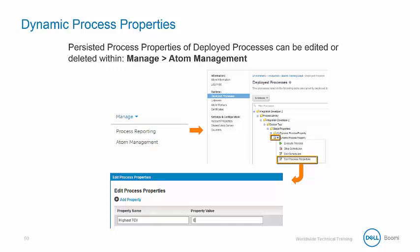When a process is deployed, a dynamic process property that is persisted can be edited or deleted under the Atom Management tab. Click the Deployed Processes tab, select the Process blue drop-down arrow containing the persisted process property, and then select Edit Process Properties. The Edit Process Properties pane will display the last run and last successful runtime stamps, as well as the property name and value, all of which can be modified. The property can be deleted or a new one created.